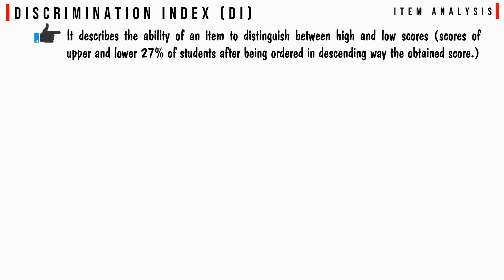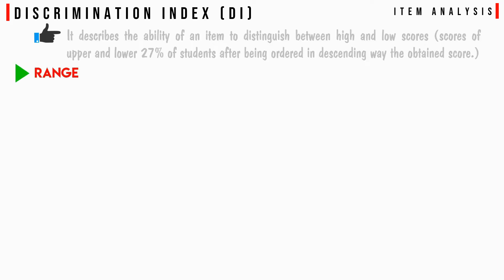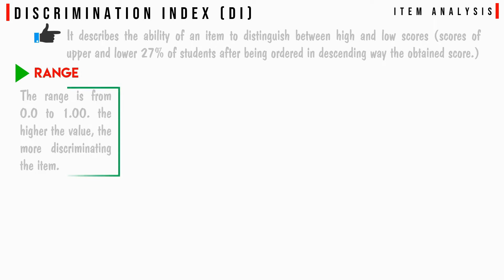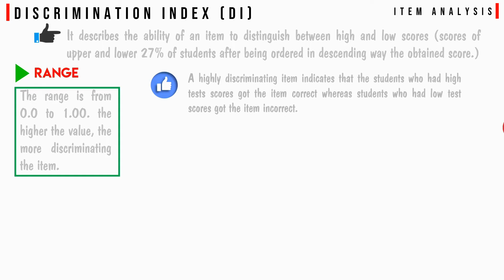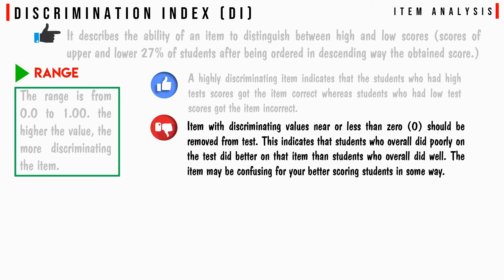The discrimination index describes the ability of an item to distinguish between high and low scorers — that is, the upper and lower 27% of students ordered by descending score. The range is from 0.0 to 1.00; the higher the value, the more discriminating the item. A high discriminating item means students with high test scores got it correct while low scorers got it incorrect. Items with a discriminating value near or less than 0 should be removed, as they suggest lower-scoring students did better on the item than higher-scoring students.